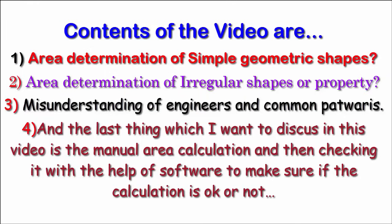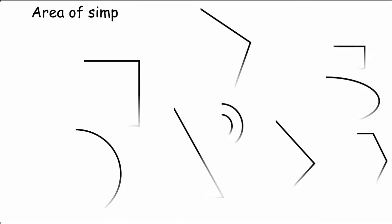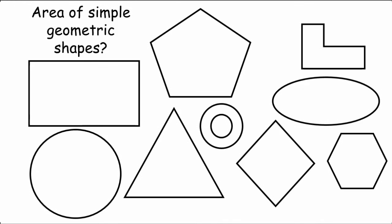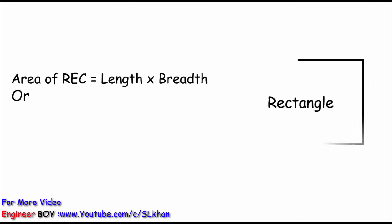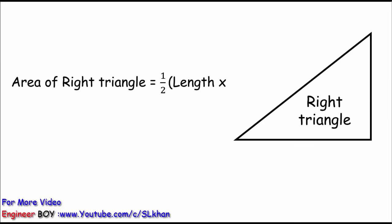Let's get started with area of simple geometric shapes. Area of a square is its side squared. Area of rectangle is the product of its two sides, length times breadth. Area of a right angle triangle is one half of area of a rectangle, or one half base times height.